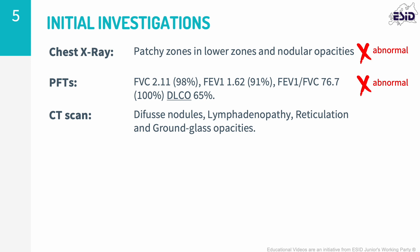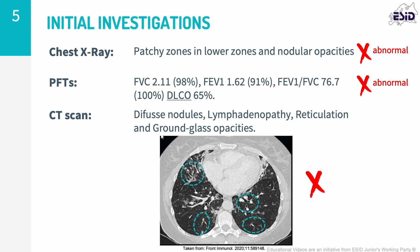Pulmonary function tests revealed a reduced diffusing capacity of the lungs for carbon monoxide, known as DLCO. CT thorax demonstrated diffuse nodules, lymphadenopathy, reticulation and ground glass opacities, while abdominal imaging confirmed inguinal lymphadenopathy and mild hepatosplenomegaly. Bronchiolar lavage was negative for bacteria and viruses; however, cellular analysis did show lymphocytosis.